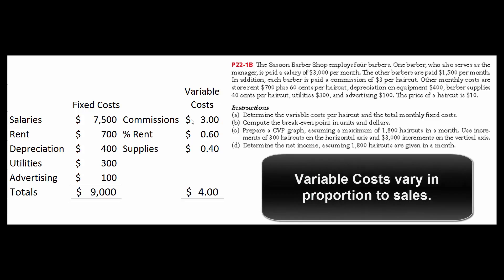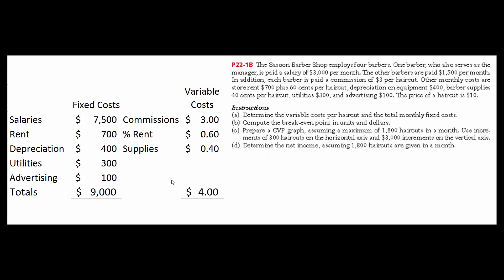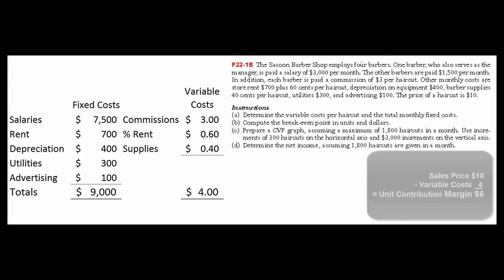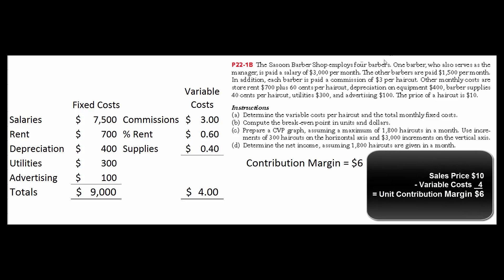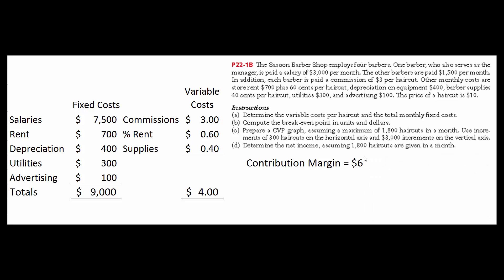The variable costs are the $3 commission per haircut, the 60 cents per haircut to the landlord, and the 40 cents per haircut for supplies — so total variable costs are $4 per haircut. Since we sell each haircut for $10, our unit contribution margin is $10 minus $4, which equals $6. We make $6 on every haircut.